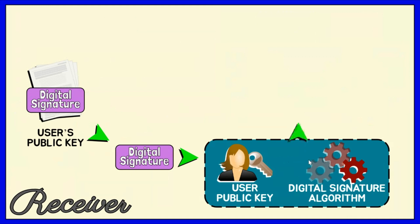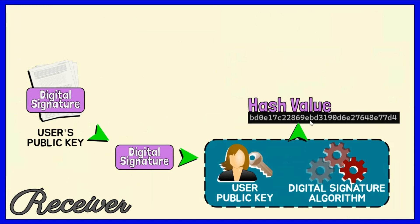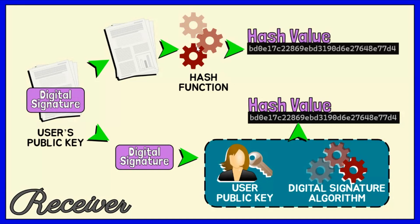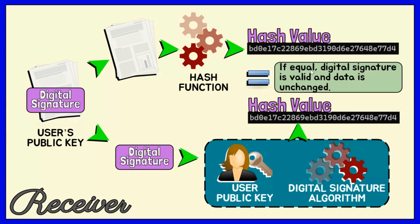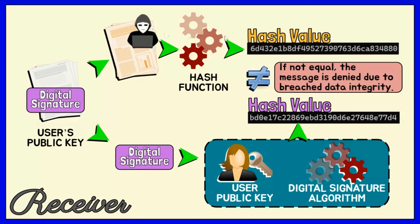The algorithm generates a hash value as output. Additionally, the receiver uses the same hash function and generates the hash value of the original data. If this generated hash value matches the hash value from the previous step, the receiver gets assurance that the digital signature is valid and can be confident that the message is unchanged. If an attacker has modified the data, the hash of the modified data and the output provided by the verification algorithm will not match. Hence, the receiver can safely deny the message, assuming that the data integrity has been breached.